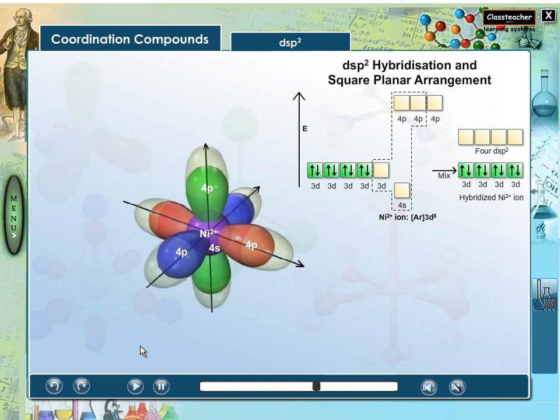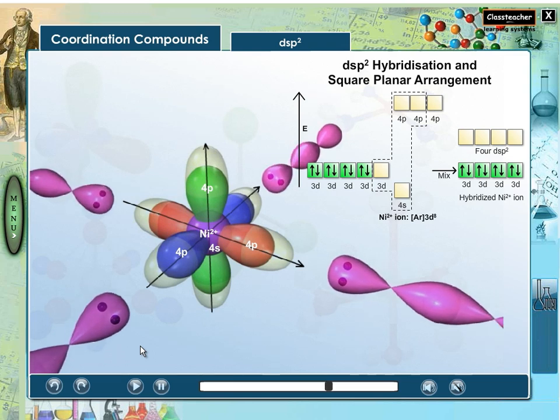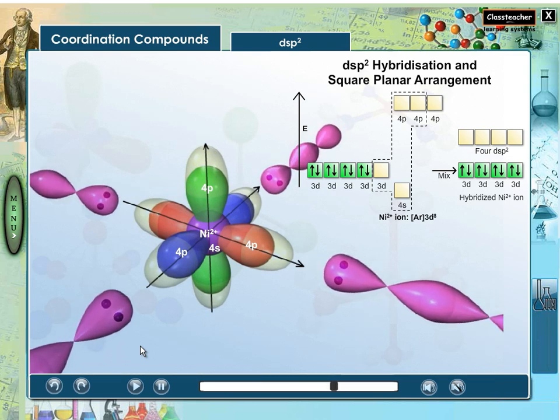nickel is in plus-2 oxidation state, and its 4dsp² hybrid orbitals point towards the corner of the square.